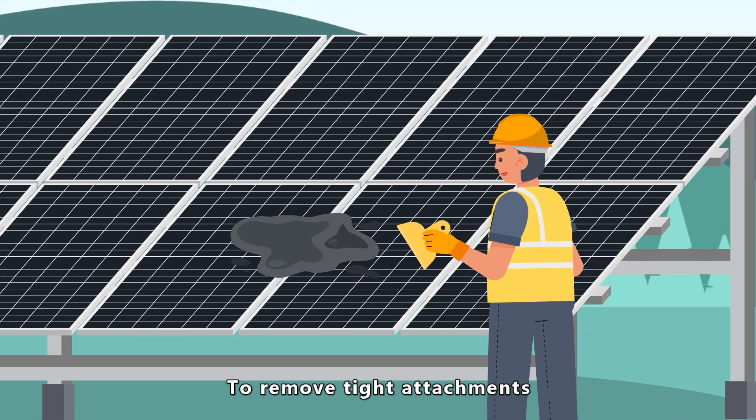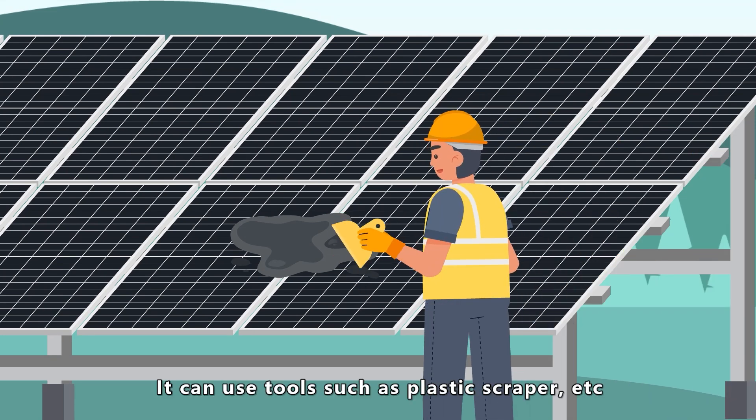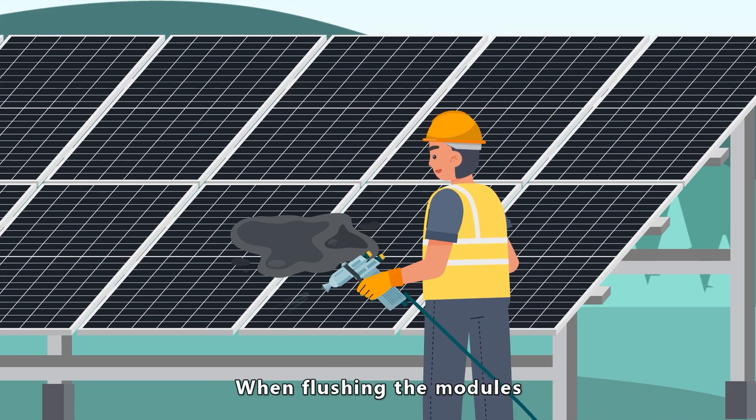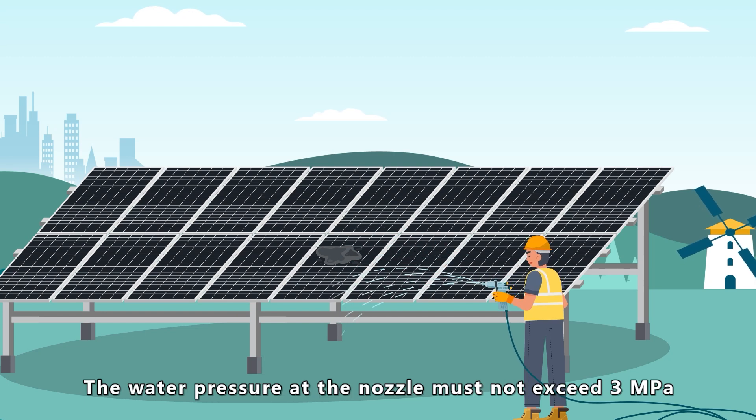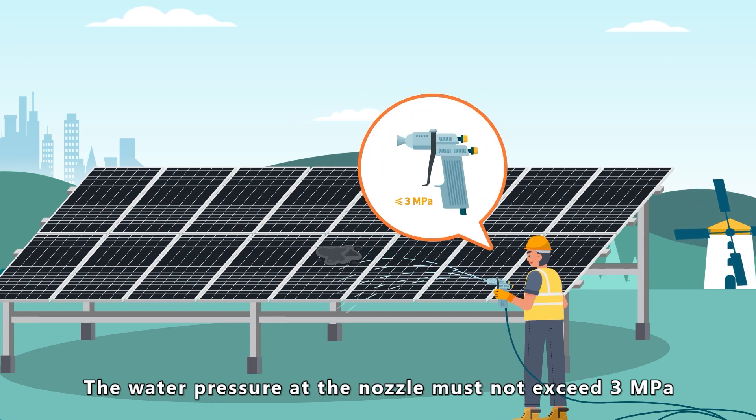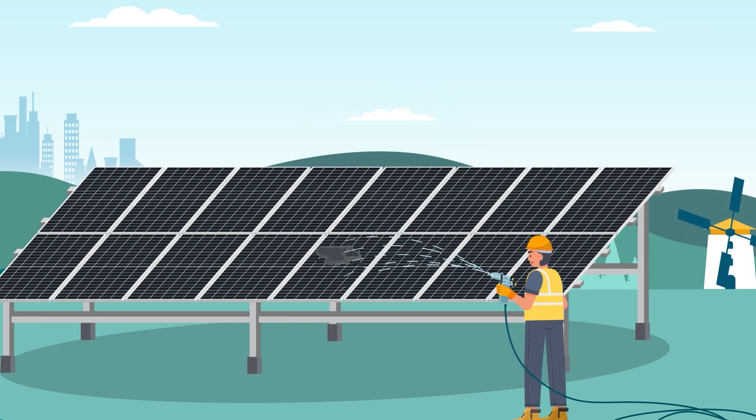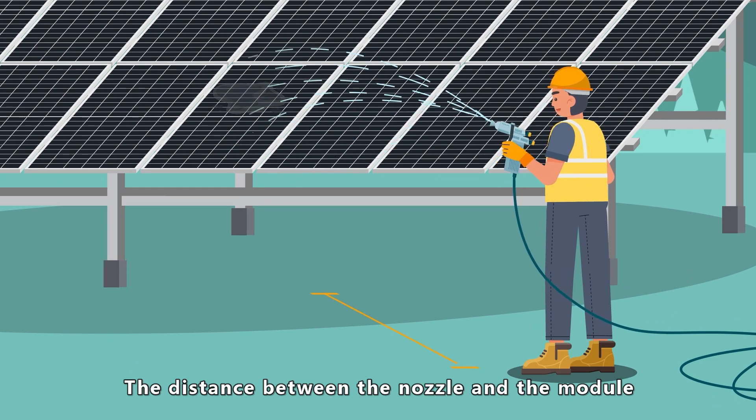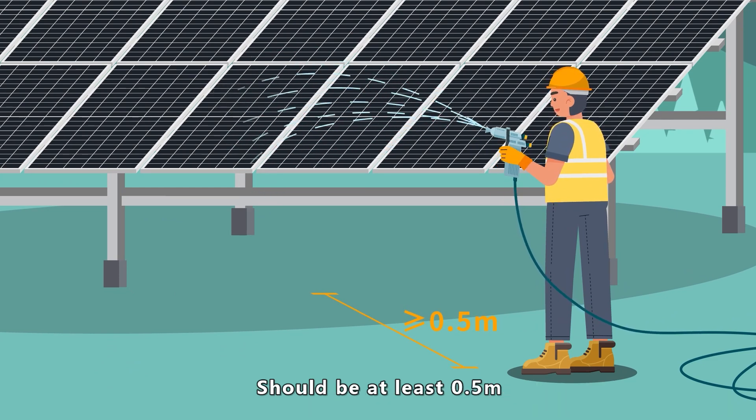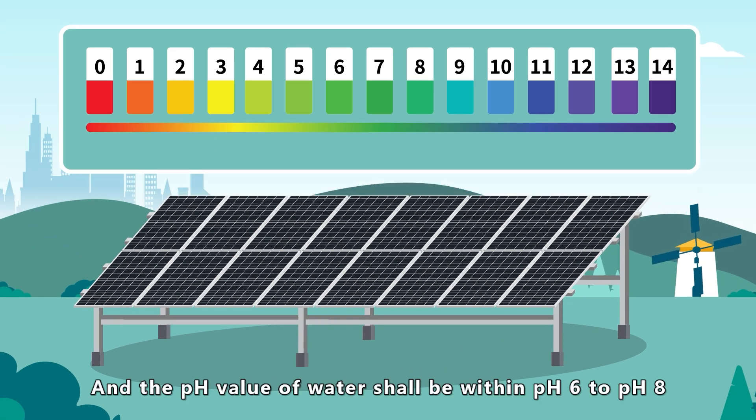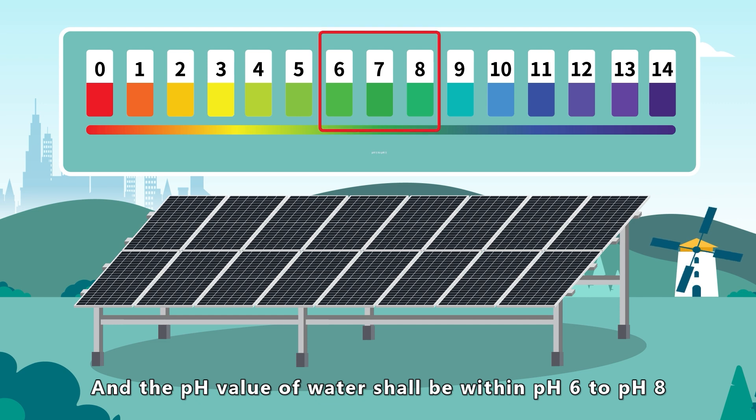To remove tight attachments, use tools such as plastic scrapers. When flushing the modules, the water pressure at the nozzle must not exceed 3 MPa. The distance between the nozzle and the module should be at least 0.5 meters and the pH value of the water shall be within pH 6 to pH 8.